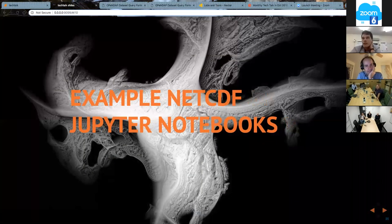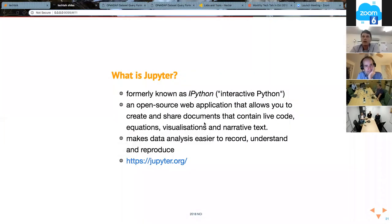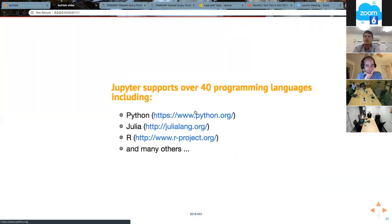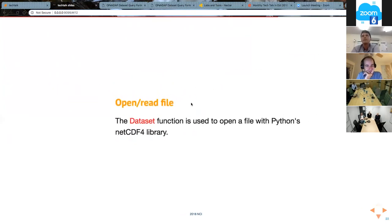I'll just go through some example Jupyter notebooks. Jupyter is an open source web application that allows you to create and share documents that contain live code, equations, visualizations, and narrative text. It makes data analysis easier to record, understand, and importantly, reproduce. It supports over 40 programming languages, including Python, Julia, and R, and many others.